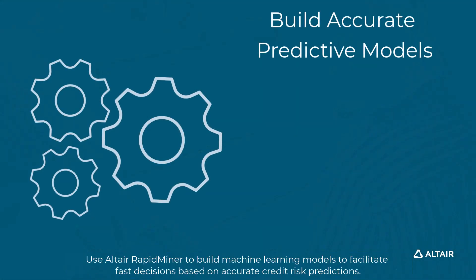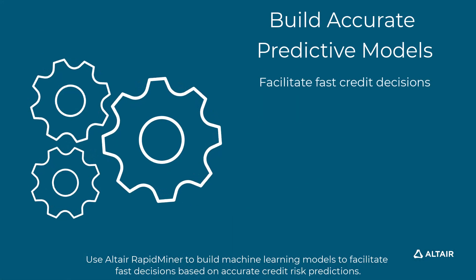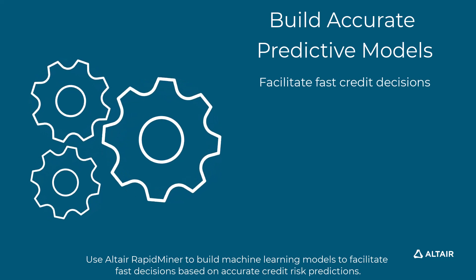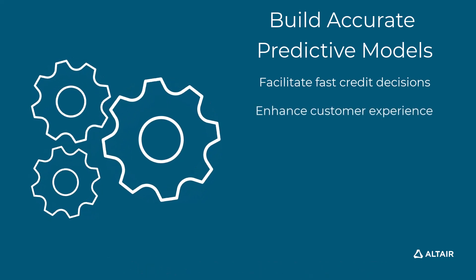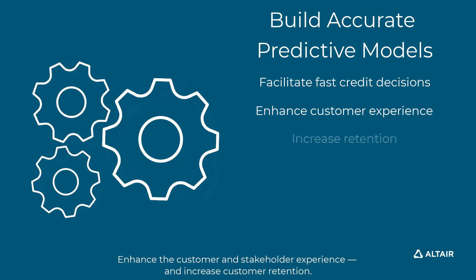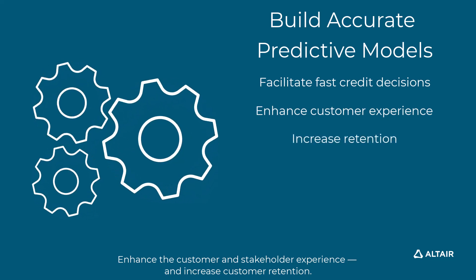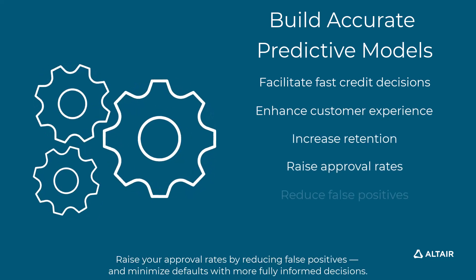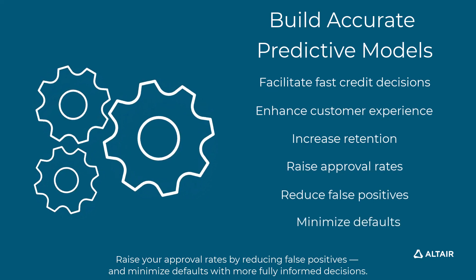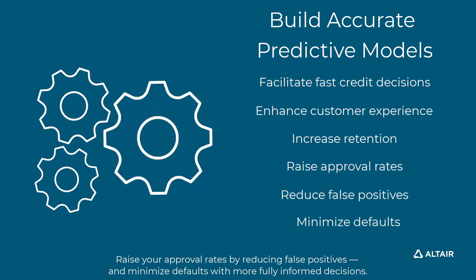Use Altair RapidMiner to build machine learning models to facilitate fast decisions based on accurate credit risk predictions. Enhance the customer and stakeholder experience and increase customer retention. Raise your approval rates by reducing false positives and minimize defaults with more fully informed decisions.